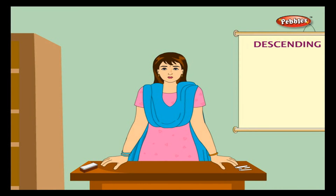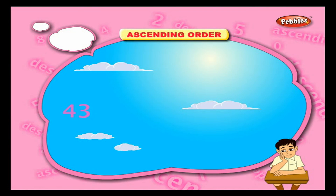Descending order: arranging numbers from the greatest to the smallest is called descending order. First we arrange the three-digit numbers from greatest to smallest, then two-digit numbers, then one-digit numbers. Let us arrange these numbers in descending order: 43, 78, 21, 15, and 65. All are two-digit numbers, so we compare the tens first.